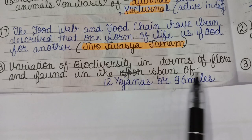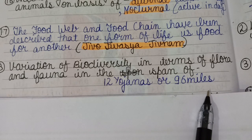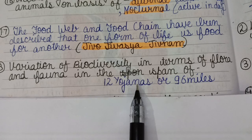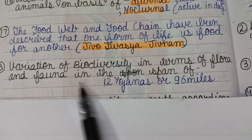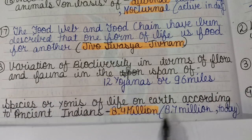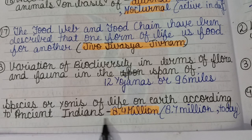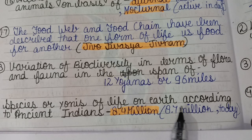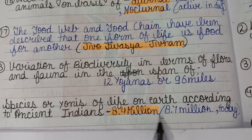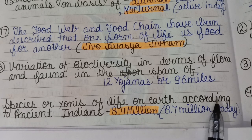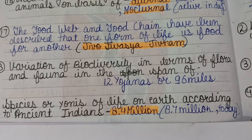Variation of biodiversity in terms of flora and fauna occurs over a span of 12 Yojana or 96 miles. According to ancient India, there are 8.4 million species of life on earth, compared to 7 million according to modern science. Thank you.